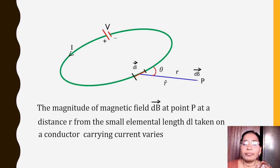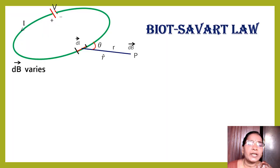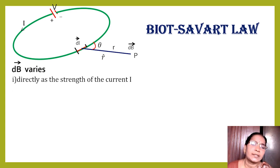So, the magnitude of magnetic field dB at a point P at a distance R from a small elemental length DL taken on the conductor carrying current varies. It varies as the current. dB is directly proportional to the strength of the current I.